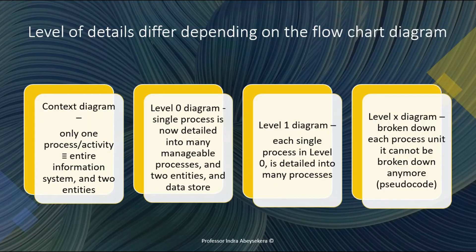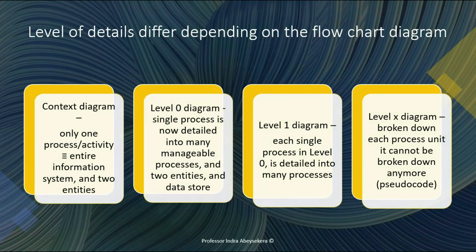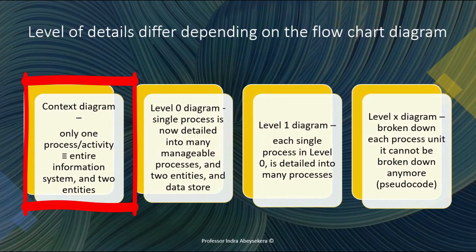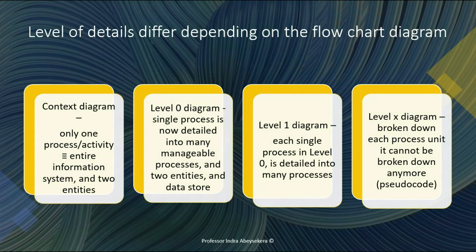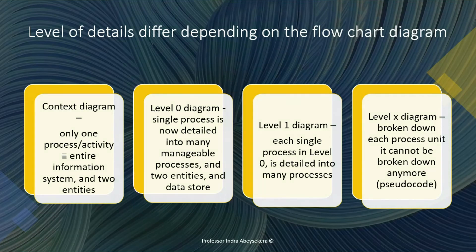The levels of detail differ depending on the flow chart diagram. The context diagram is the highest level diagram — there is only one process or activity, representing the entire information system. In our example there were two external entities. The next level of detail is called the level zero diagram, where the single process or information system from the context diagram is detailed into more manageable processes, entities, and a data store.